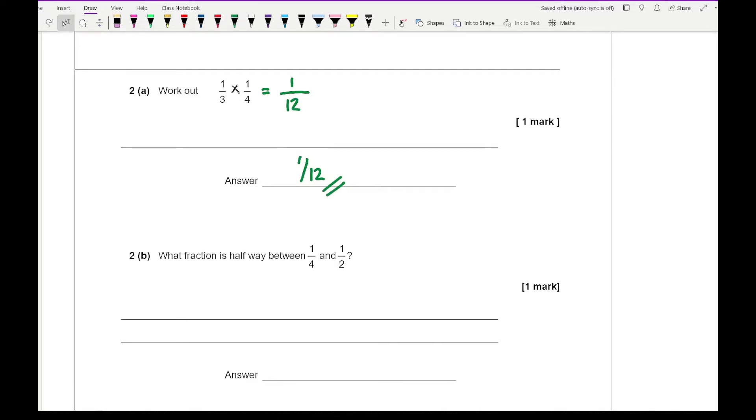Question 2b says what fraction is halfway between 1 quarter and 1 half? One way is to convert both into decimals, so we get 0.25 and 0.5. To find the halfway number, add them to get 0.75, divide by 2 to get 0.375. Then convert this decimal into a fraction: 0.375 over 1 becomes 375 over 1000, which simplifies to 3/8.